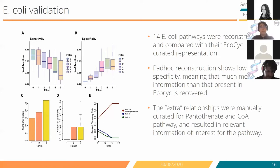We manually curated all the extra relationships present in the reconstructed pathways. In the manual curation, we assigned each relationship a rank from one to three, where rank one is low relevance and rank three is high relevance. We see that especially with higher filters, high-relevance relationships outperform the lower-relevance relationships.